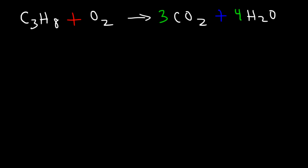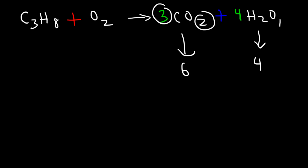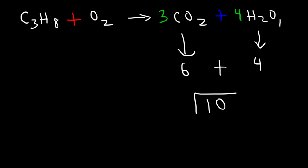Now we need to balance the oxygen atoms. I like to count the oxygen atoms on the right side and figure out what number to put in front of O₂. We have four oxygen atoms in the four water molecules (four times one is four), and six in the CO₂ (three times two is six). That's a total of ten oxygen atoms on the right. Ten divided by two is five, so we put a 5 in front of O₂.